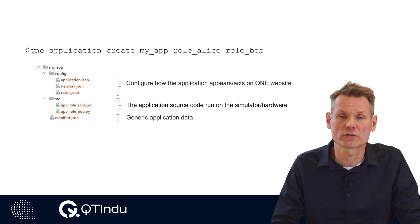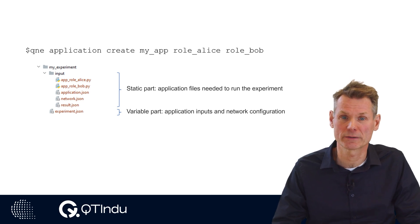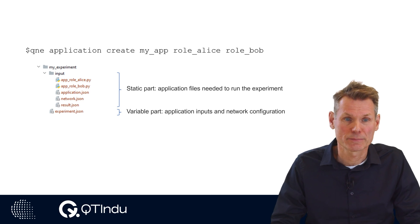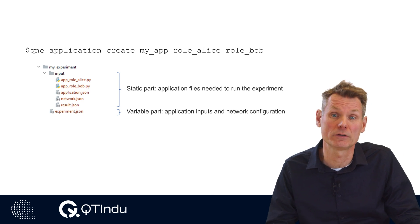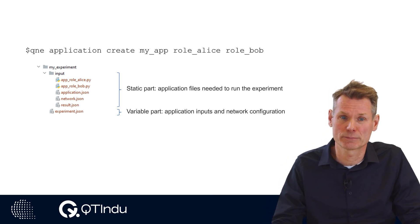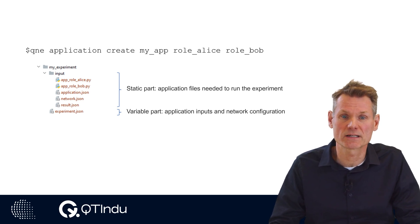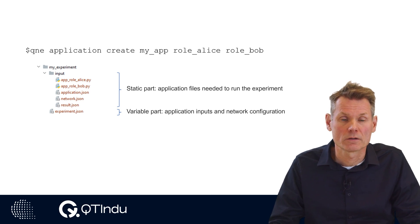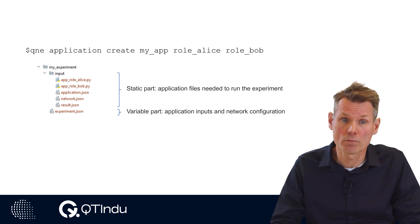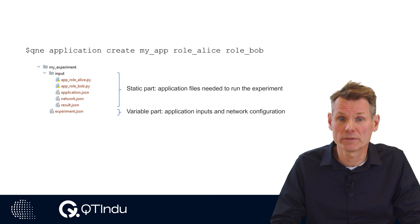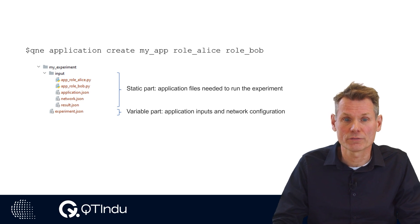First we look a bit closer at the file structure of an experiment. After executing the experiment create command, we get the following experiment file structure. The experiment file structure consists of a directory called inputs where the relevant application files are copied — these files are static and do not change for each experiment run. An experiment.json file holds general experiment data and the inputs for the experiment run. These inputs typically are values for the input parameters of the application source codes for each role, and values for the selected network node parameters and network channel parameters that define the quantum network. For each experiment run, the contents of this file may change.